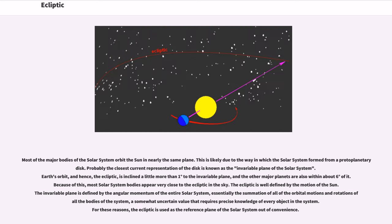Most of the major bodies of the solar system orbit the Sun in nearly the same plane. This is likely due to the way in which the solar system formed from a protoplanetary disk. Probably the closest current representation of the disk is known as the invariable plane of the solar system. Earth's orbit, and hence the ecliptic, is inclined a little more than one degree to the invariable plane, and the other major planets are also within about six degrees of it. Because of this, most solar system bodies appear very close to the ecliptic in the sky.